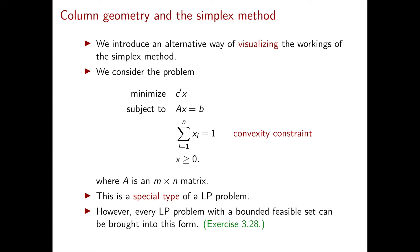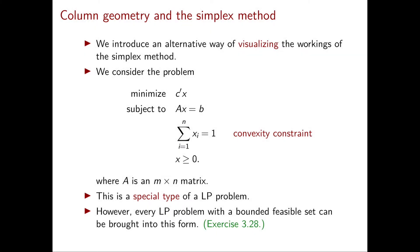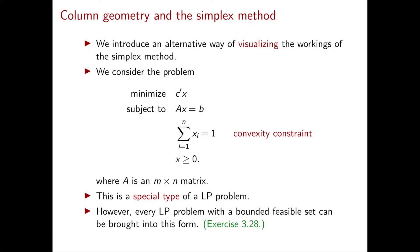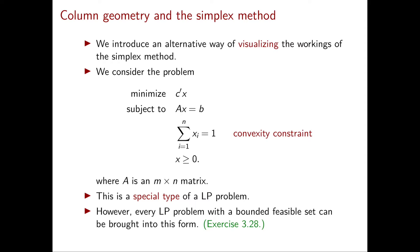To do this we consider a linear programming problem in a very special form that we have never seen before. This form is very similar to the standard form. In fact we are minimizing c transposed x, we have constraints of the form Ax equal to b, and we have non-negativity on all the variables. The unique difference is that here we have one more constraint: the sum of all the variables equal to one. This constraint is called the convexity constraint.